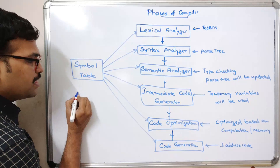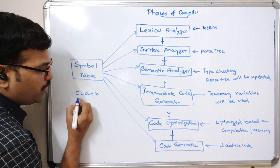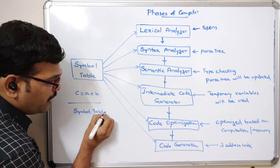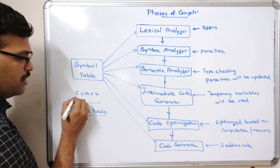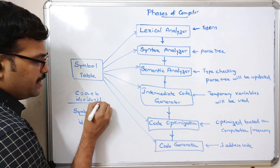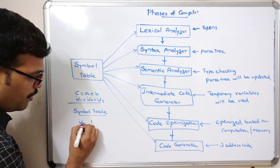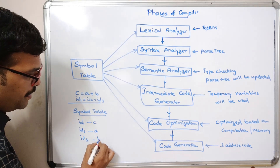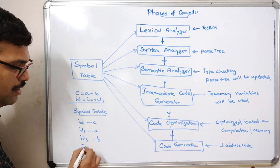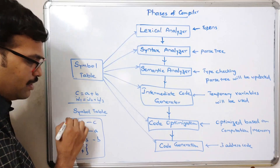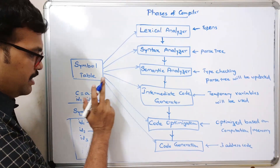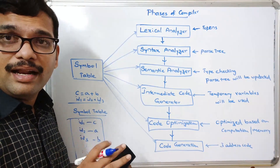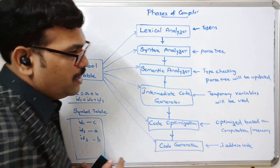For example, the instruction 'c = a + b' — here c, a, and b are identifiers. In the symbol table, all the details are maintained: id1 equals id2 plus id3, where id1 is c, id2 is a, and id3 is b. The details of instructions will be maintained in the symbol table and given as input to the lexical analyzer. If any error occurs in any phase, that will be given to the error handler.